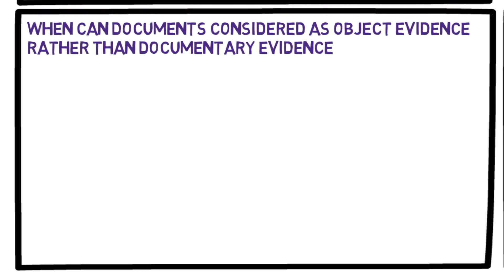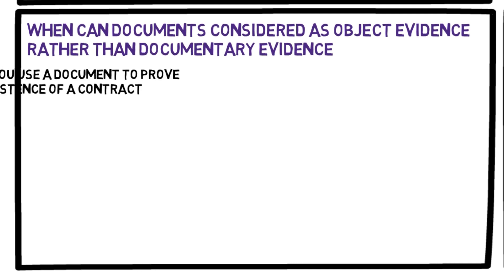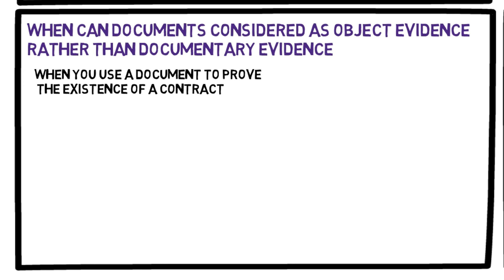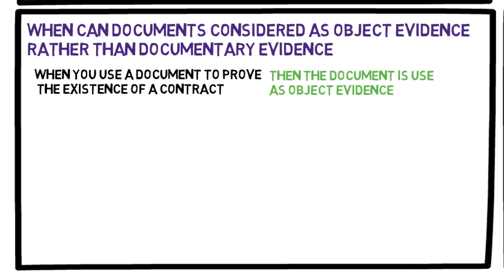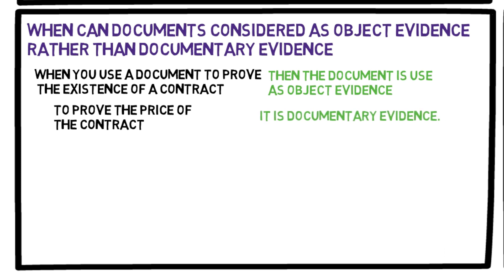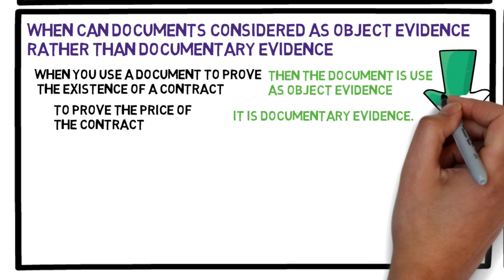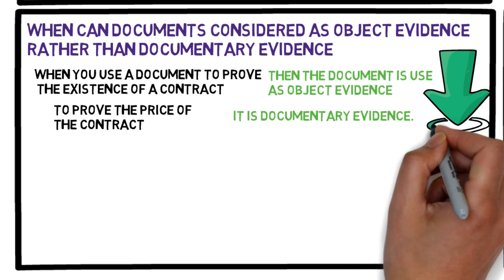When can documents be considered as object evidence rather than documentary evidence? When you use a document to prove the existence of a contract, then the document is used as object evidence. But if you use the document to prove the price of the contract, then it is documentary evidence. I will discuss documentary evidence further in a separate video — I will put the link in the description box when it is already available.